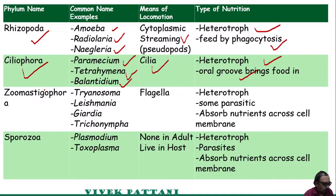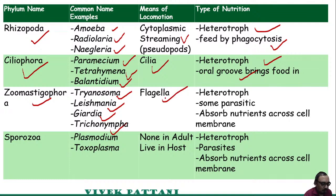Moving forward with the next phylum Zoomastigophora, common examples are Trypanosoma, Leishmania, Giardia, and Triconympha. Their means of locomotion is by flagella. Their type of nutrition is heterotrophic — some are parasitic and some absorb nutrients across the cell membranes.